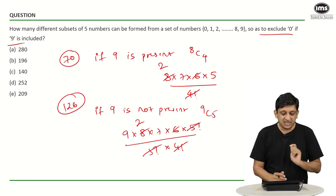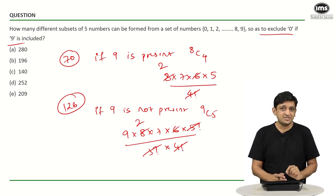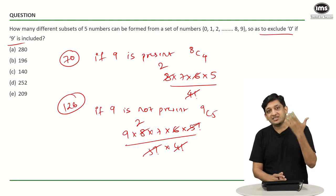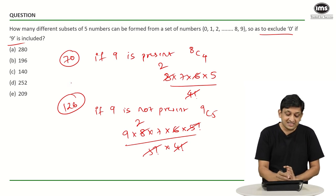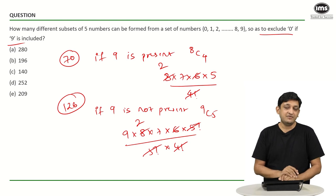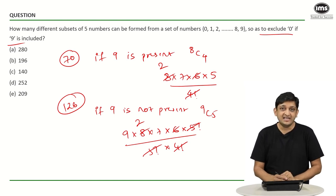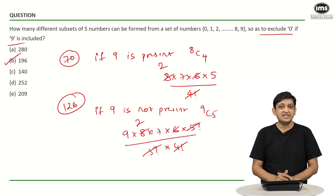So the total number of ways to create a subset of 5 numbers with the given condition will be 70 plus 126, which is 196. The correct answer here is option B, that is 196.